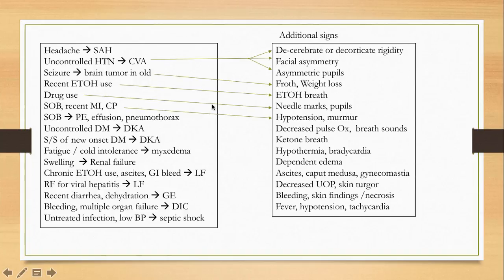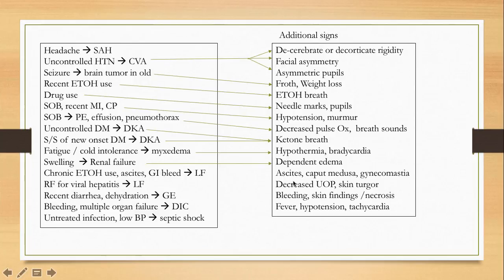Patients with cardiac causes of loss of consciousness usually have either a murmur or hypotension. Pulmonary causes present with decreased pulse oxygen and decreased breath sounds. In myxedema coma, there may be ketotic breath, hypothermia, and bradycardia. Renal failure may show dependent edema. Liver failure may show ascites and other stigmata of liver disease. Severely dehydrated patients have decreased urine output and poor skin turgor. In DIC-related shock, bleeding occurs from multiple sites. In septic shock, the classic triad is fever, hypotension, and tachycardia.